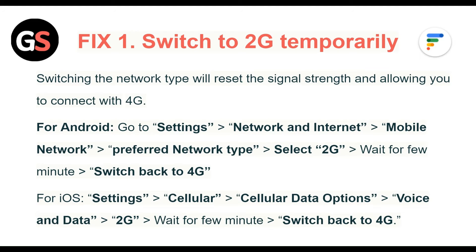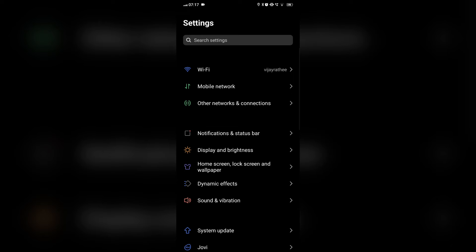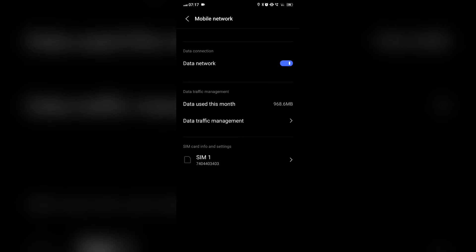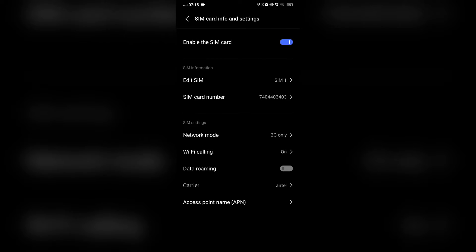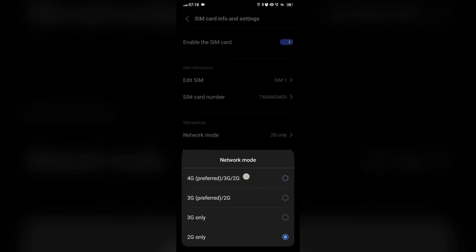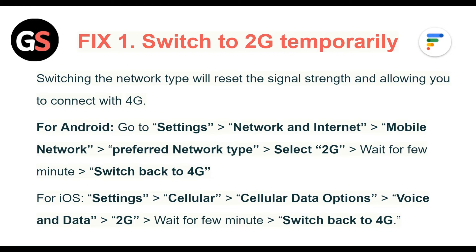Fix 1: Switch to 2G temporarily. Switching the network type will reset the signal strength and allow you to connect with 4G. For Android, go to Settings, then Network and Internet, then Mobile Network, then Preferred Network Type, select 2G, wait for a few minutes and then switch back to 4G.